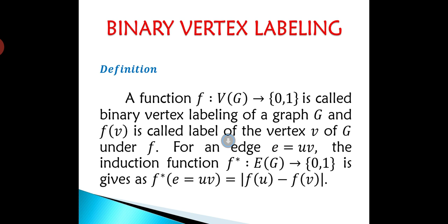For an edge e = uv, the induced function f*: E(G) → {0,1} is given as f*(e = uv) = |f(u) - f(v)|.